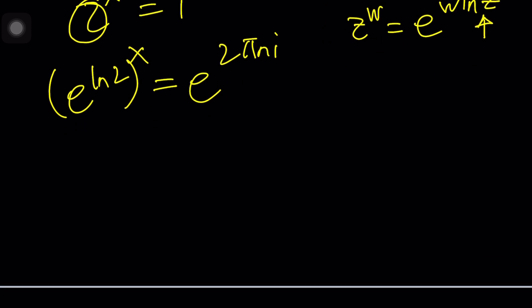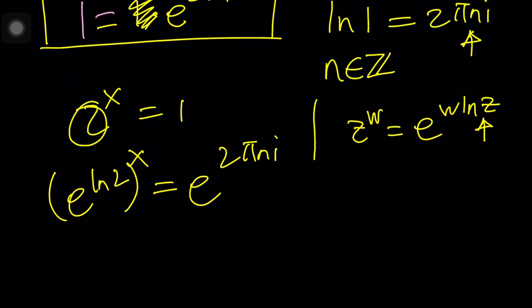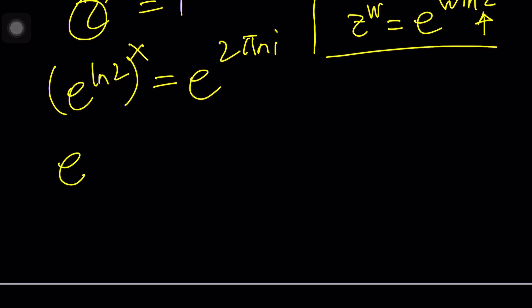So, let's go ahead and multiply this. And even if you use this approach, you would arrive at the same result. e to the power x ln 2 equals e to the power 2 pi n i. Nice. Where do we go from here? Since the bases are equal, so are the exponents.